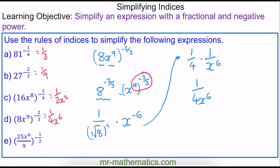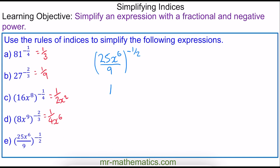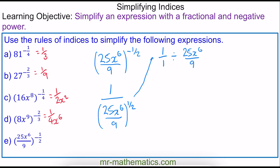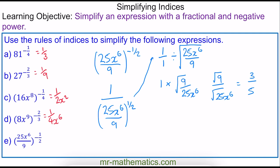And finally for question E, the negative 1 half means this is 1 over 25x to the 6 divided by 9, with the denominator raised to the 1 half. To see why this flips the denominator upside down, I'll write it as a division of two fractions: 1 over 1, divided by 25x to the 6 over 9, all square rooted. Dividing by a fraction means multiplying by its reciprocal, so it becomes 1 multiplied by the square root of 9 over 25x to the 6. Taking the square root of numerator and denominator separately gives square root of 9 over root of 25x to the 6, which becomes 3 over 5x to the 3.